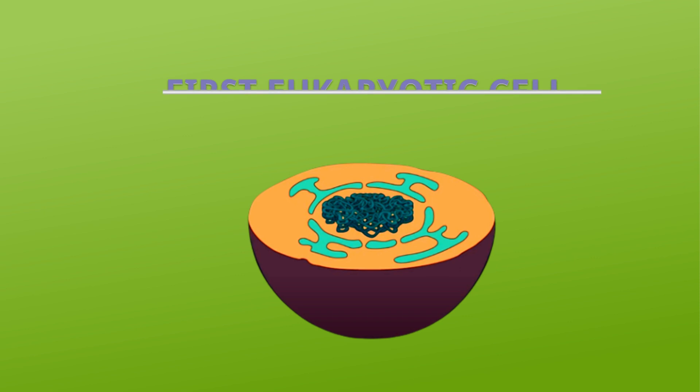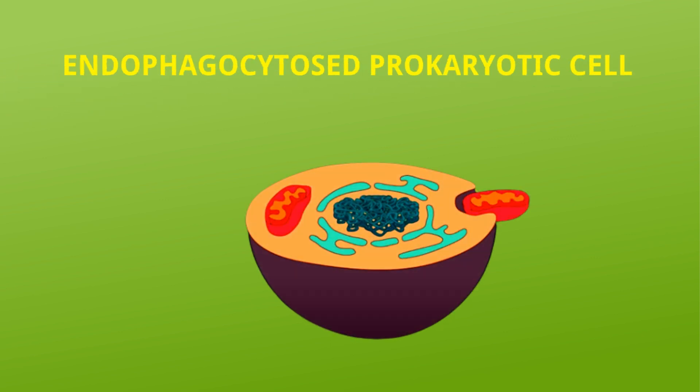This eukaryotic cell endophagocytosed an aerobic, or oxygen using, prokaryotic cell, which may have been prey or a parasite.